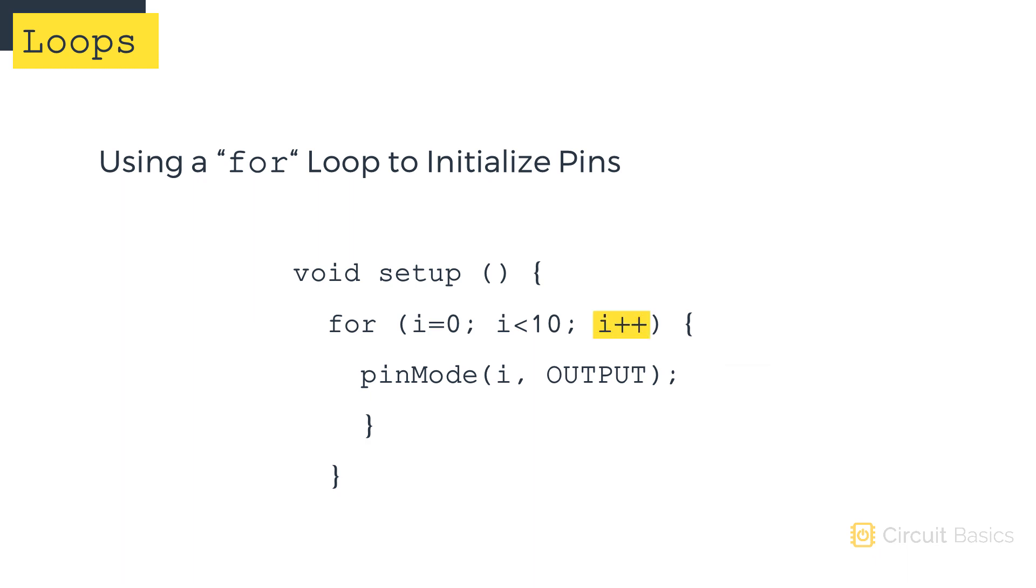The next time through the loop, the iteration value i++ will make the loop control variable increase by one. So i will be incremented by one, making it equal to one. Since i equals one now, pin one will be set as an output.